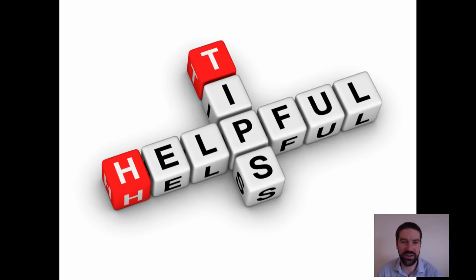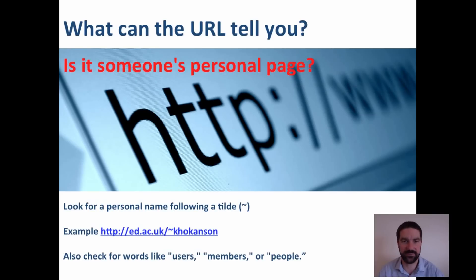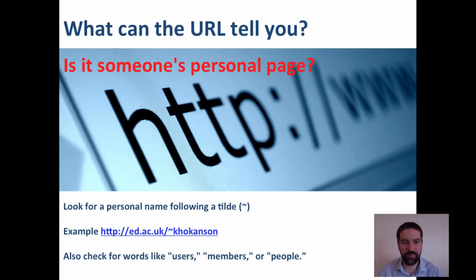Here are a few tips and helpful hints. First, we need to reinforce to students that they shouldn't believe everything they read. Just like a traditional source, any digital source we must always be critical towards and think about where that information came from in the first place. Looking at websites — what can the URL tell us? We can check if it's someone's personal page; normally there's a little wavy line, and it also has words like 'users,' 'members,' or 'people' in it. Remember, if it's a personal page it's likely to be biased towards that particular person.